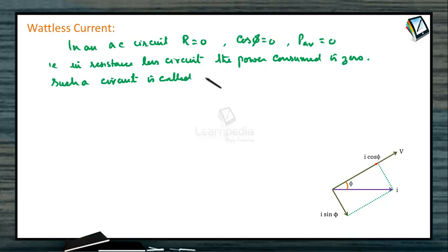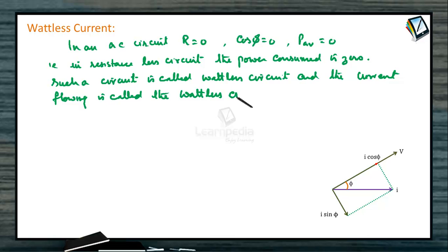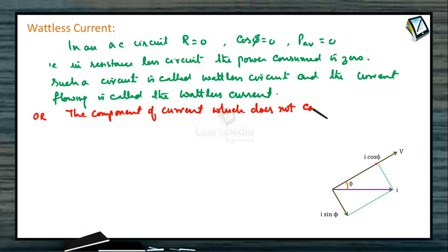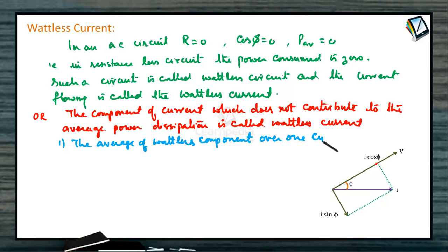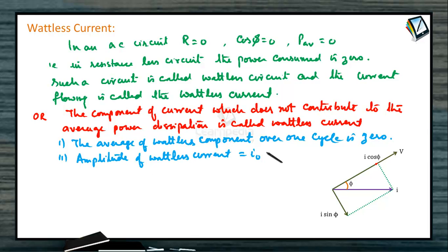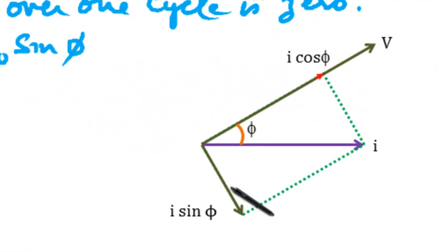Such a circuit is called a wattless circuit and the current flowing is called the wattless current. The component of current which does not contribute to the average power dissipation is called wattless current. The average of the wattless component over one cycle is zero. Amplitude of wattless current is I₀ sin phi; RMS value is I_RMS sin phi, that is I₀ by root 2 sin phi. It is in quadrature, 90 degrees with the voltage.